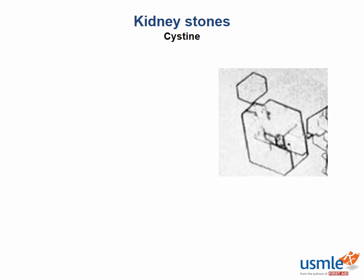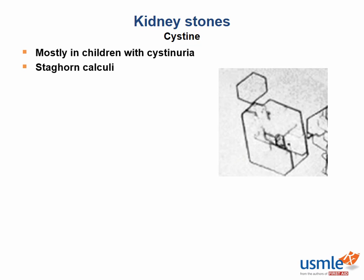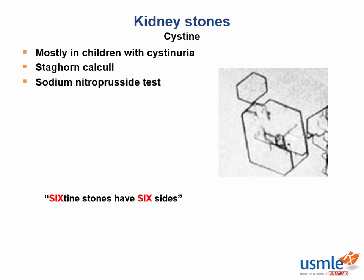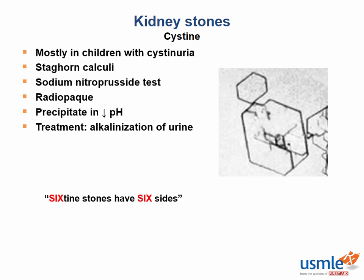Finally, there are the cystine stones, which are very rare but can occur in the context of genetic cystinuria, so they are mostly seen in children. They can also form staghorn calculi. The sodium nitroprusside test is sometimes used for detection and will be positive for urine containing cystine. On microscopy, these stones appear hexagonal, which can be remembered with the mnemonic: cystine stones have six sides. They are radio-opaque and precipitate in decreased pH. Therefore, we treat them by alkalizing the urine.